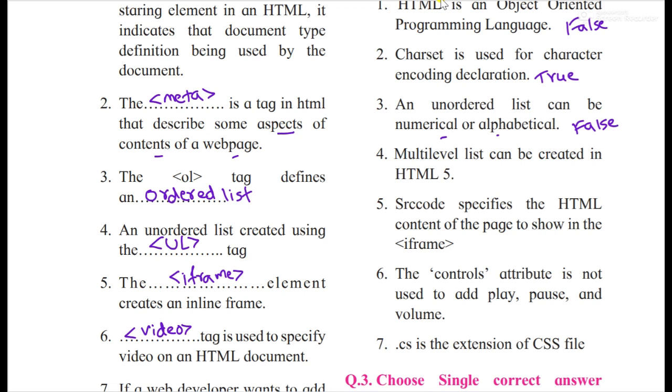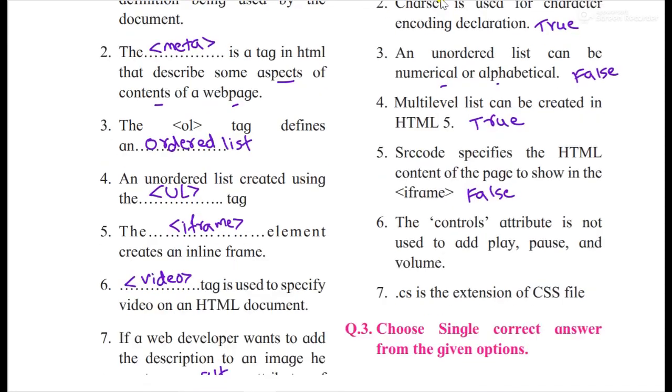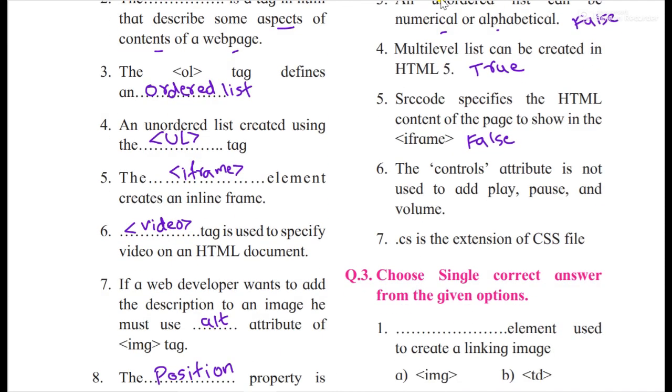Multi-level list can be created in HTML 5. Yes, you can. True. Src code specifies the HTML content of the page to show in the iframe. No, it's false. Then the controls attribute is not used to add play, pause, and volume. Is it? No. They are saying so, that is the difference. If in exam they can ask the controls attribute is used to add play, pause, and that means at that time it will be true. So check this 'not'.